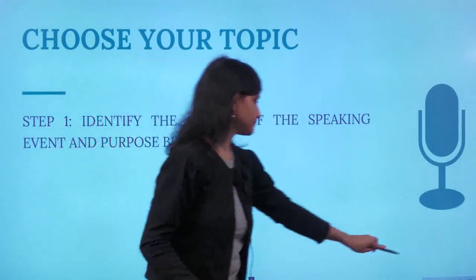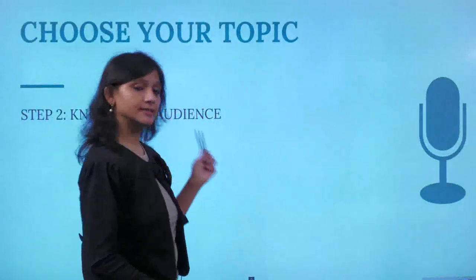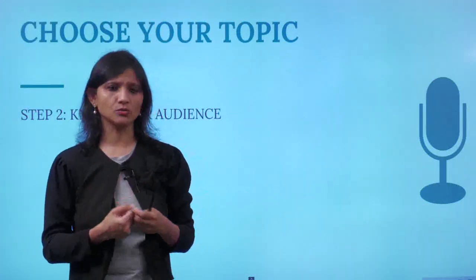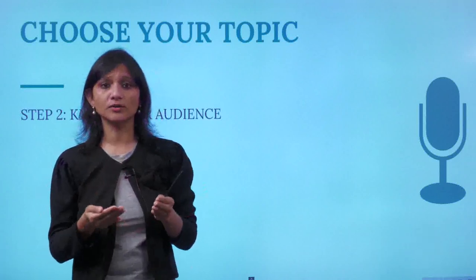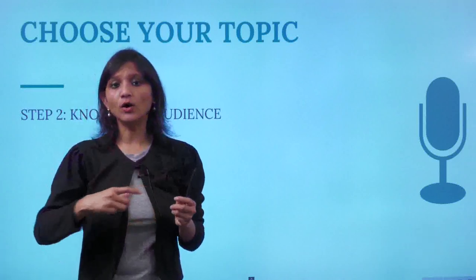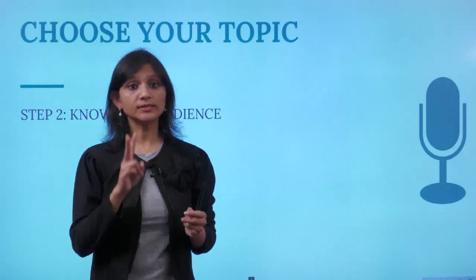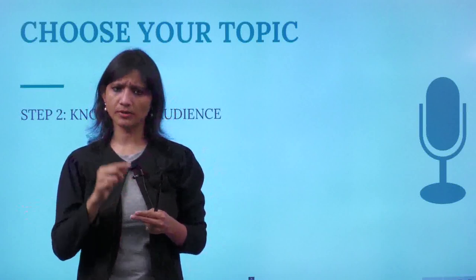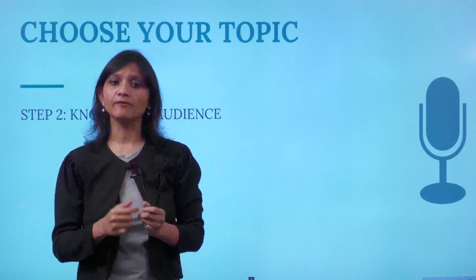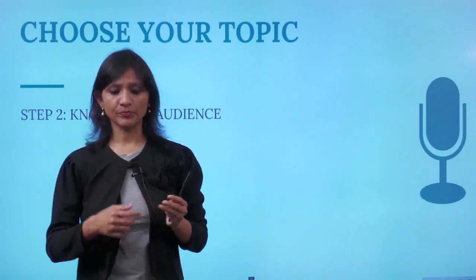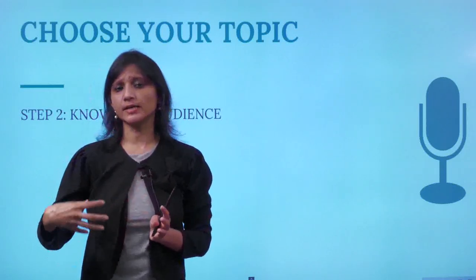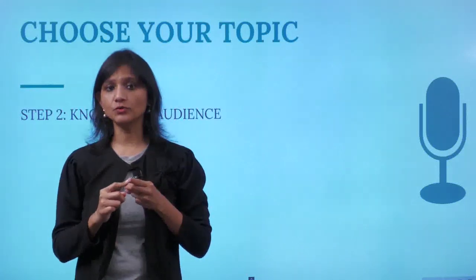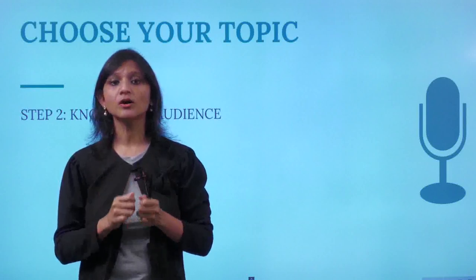Moving on to the second step. You remember I had talked about audience — who is my audience, what kind of audience am I talking to, what are their likes and dislikes, what is the demography, age, and interests? All these things you have already checked. So the second step in choosing the topic is: you have to analyze your audience. Do a proper, thorough research about your audience. These steps have already been touched upon in our lesson number three, where we deep dive and understand our audience. So step two is audience analysis or audience research.